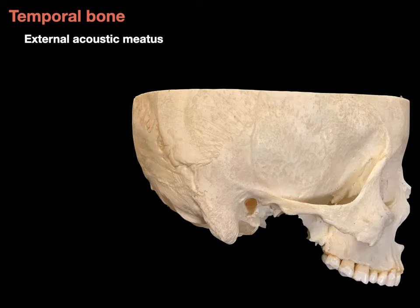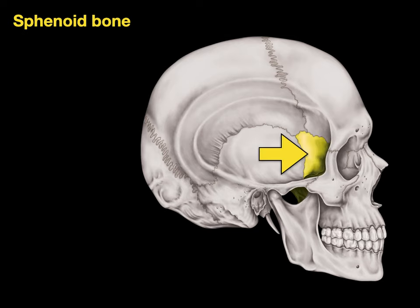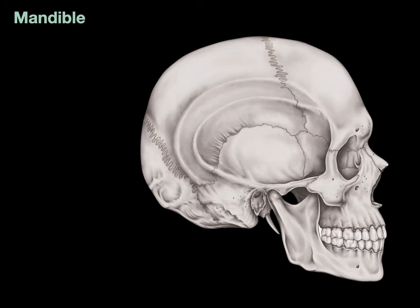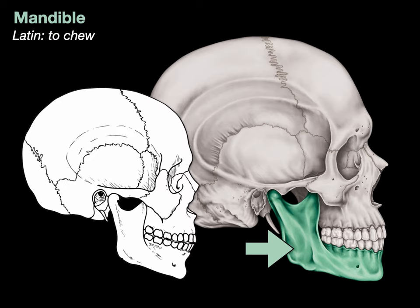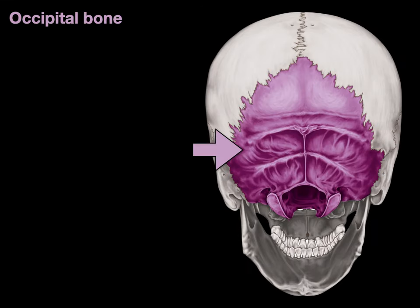The temporal bone also contains the external acoustic meatus right here. External for outside, acoustic for hearing, and meatus means canal — it goes into your eardrum; it's that opening right there. The sphenoid bone forms a wedge shape on the side of the skull — I'll talk more about that later. The mandible gets its name from the Latin to chew, because it's the bone that allows you to move your jaw and chew or masticate. The occipital bone is shown in purple — occipital is Latin for the back of the skull.